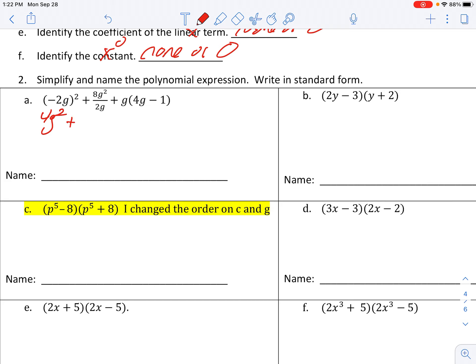Eight g to the second divided by two g. Eight divided by two is four. G to the second divided by g to the first. Remember, back to your exponent rules. I can cancel out a g and left with a four g. All you're doing is subtracting those.